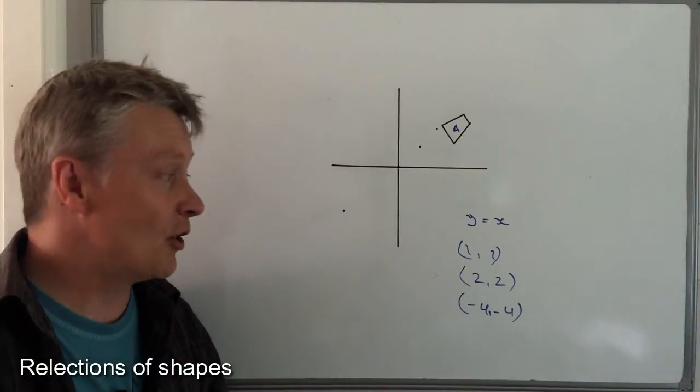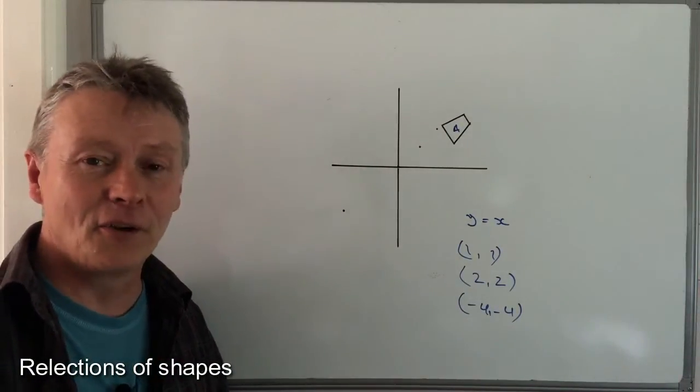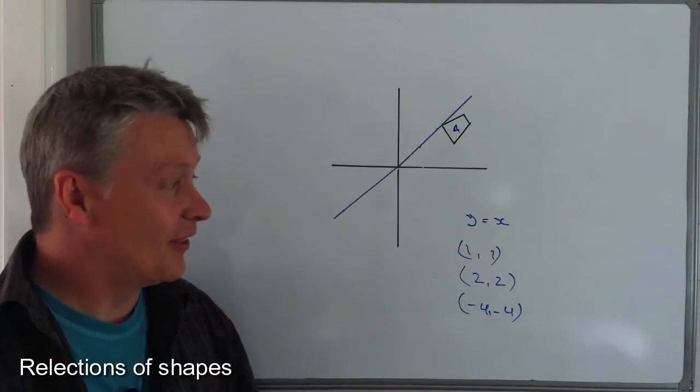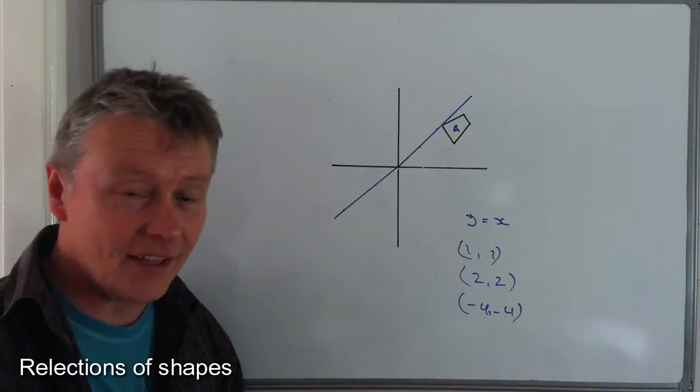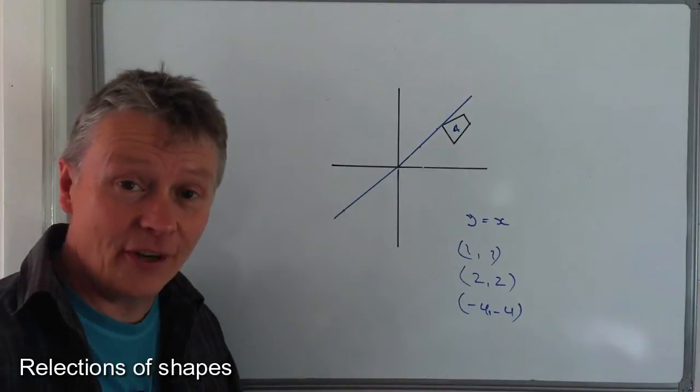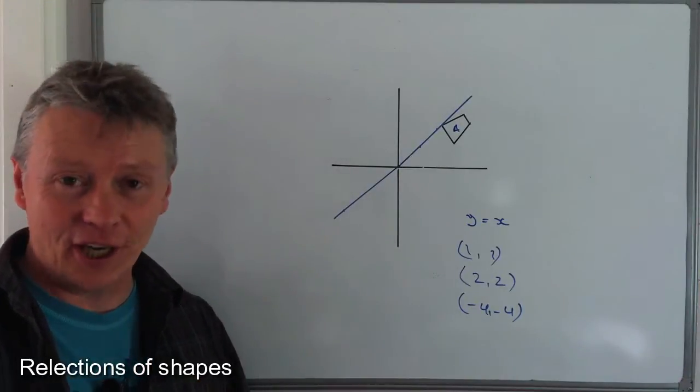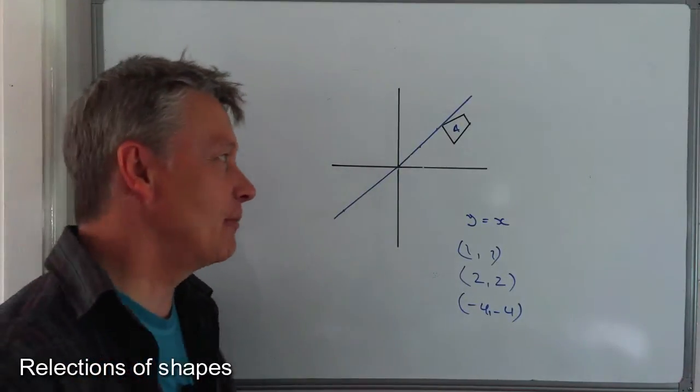So I'm just going to join these dots up and create the line y equals x. I've created the line y equals x, and what I need to do now is accurately reflect shape A to create shape B.